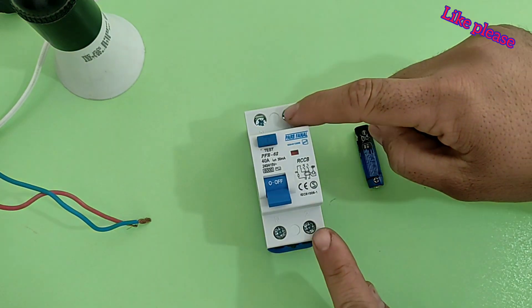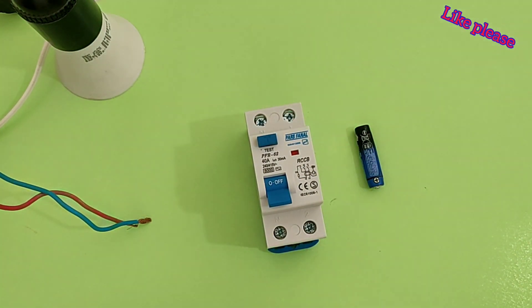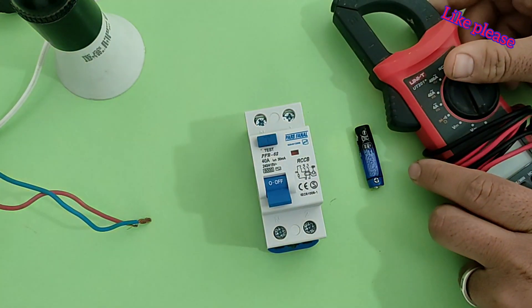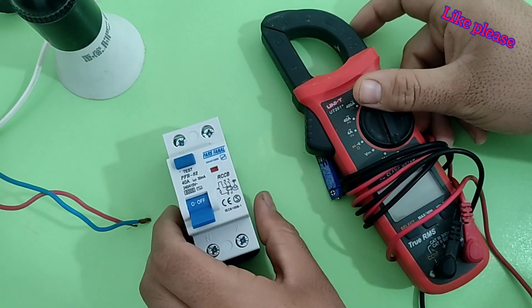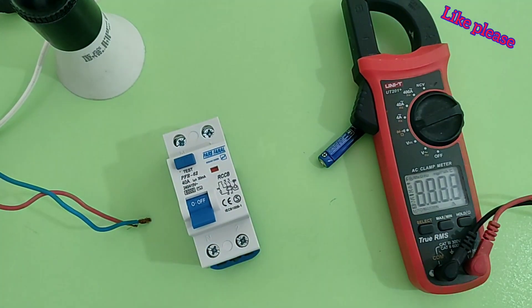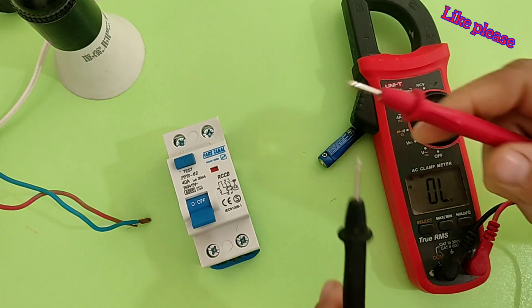Now we can also test the switch blades using a multimeter. To make it work, we set the multimeter to beep mode. In this mode, if we connect the probes, the device beeps.